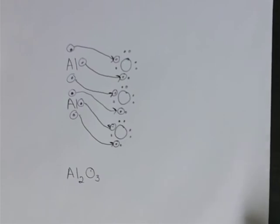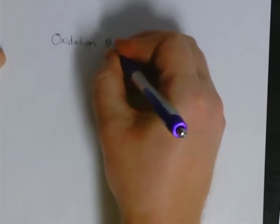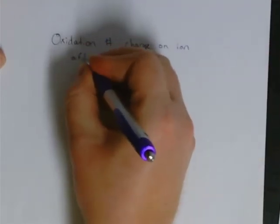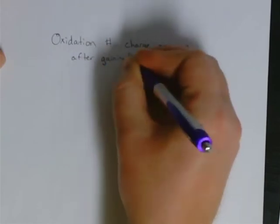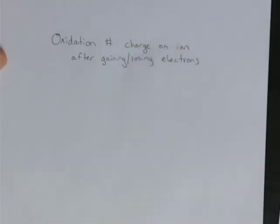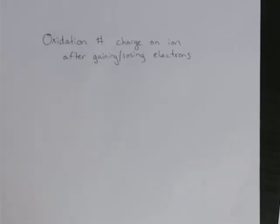That's one way to model these interactions between electrons, but there's actually a much easier way to do all of these — it involves knowing what the oxidation number is. The oxidation number, as listed on the homework, is the charge on the ion after gaining or losing electrons. We need to know how many valence electrons each atom has and whether it's a metal or non-metal, because that tells us if it's going to lose electrons and become a positive ion, or gain electrons and become a negative ion.